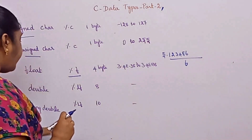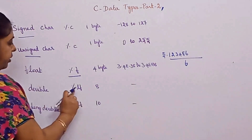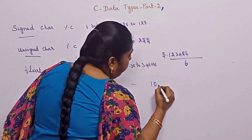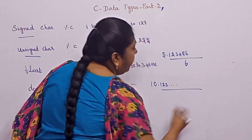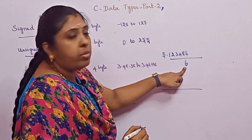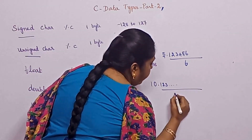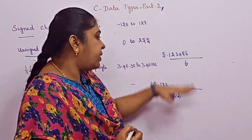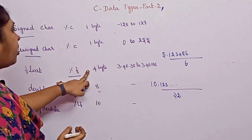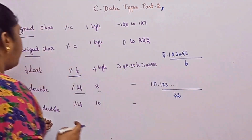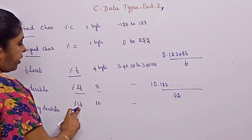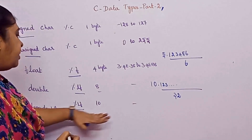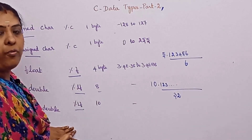The next comes the double. We will frequently use float and double; in rare cases only we will use the long double. For the double, the format specifier is %lf and the size is 8 bytes. An example for double would be 10.123 etc. For float we said it can support 6 digits, but double can support 32 digits after the decimal point — that is the difference between float and double. Float occupies 4 bytes and double occupies 8 bytes. For long double the format specifier is also %lf, or in some books it is referred to as capital L and small f. The size is 10 bytes.